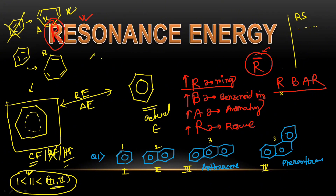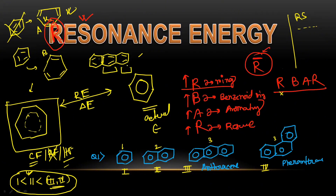Now to compare benzenoid rings you have to draw the proper pi bond structure. Let's draw for anthracene: make one benzene ring, then the second ring as a benzene ring with its pi bonds, then the third similarly. You have to draw in such a way that you maximize the number of benzene rings. Here you can see two separate benzene rings, but the third ring has a pi bond that is shared — that shared ring is actually a quinonoid structure. So in anthracene: two benzenoid structures and one quinonoid structure.